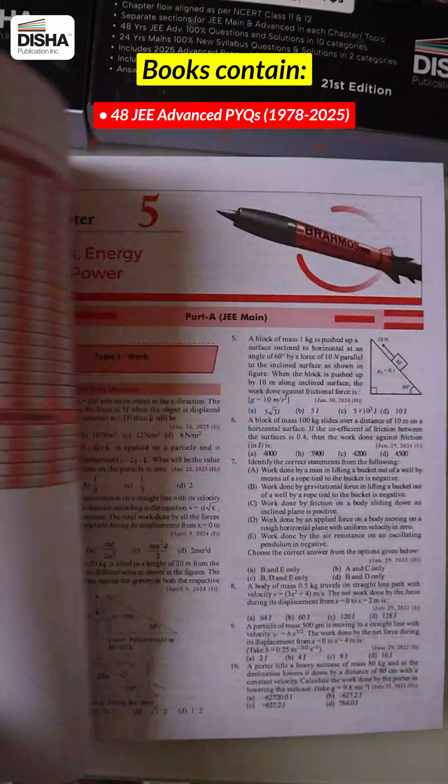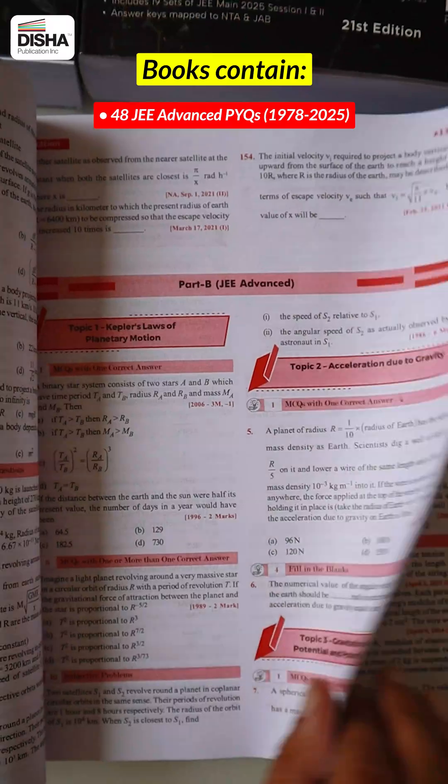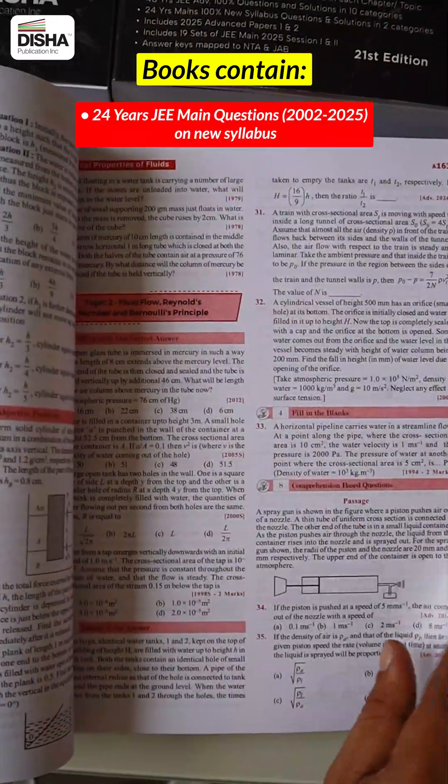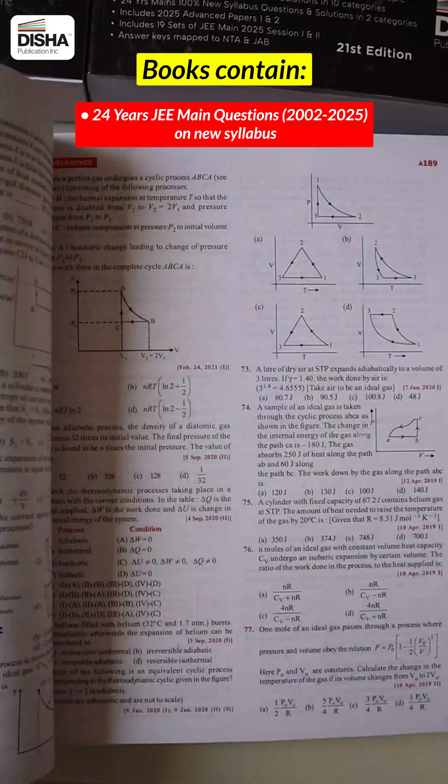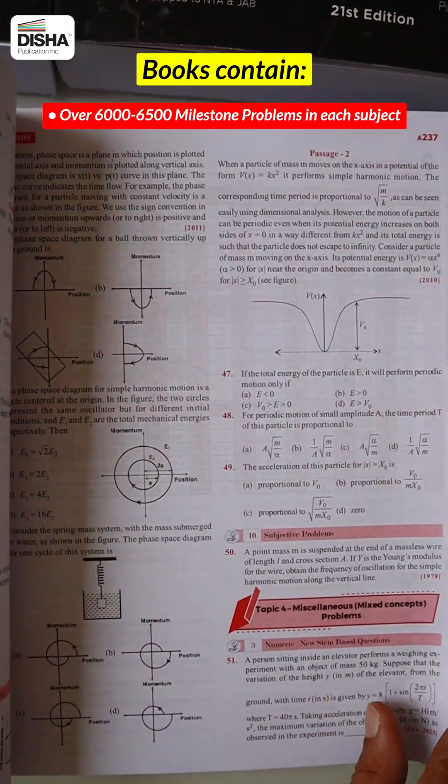This book contains 48 years J.E. Advanced papers, 1978 to 2025, 24 years J.E. Main questions, 2002 to 2025 on new syllabus. Over 6,000 to 6,500 milestone problems in each subject.